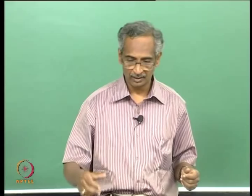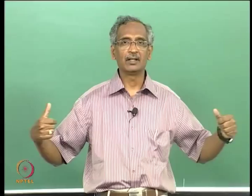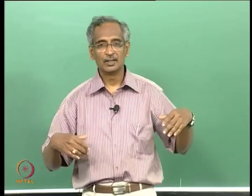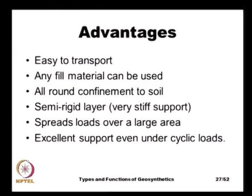Geocells are easy to transport because they come in collapsed form and do not occupy much volume. Once expanded on site, they can cover a very large area — sometimes as wide as 4 meters and 10 meters long — while in collapsed form they may be as compact as a laptop bag.